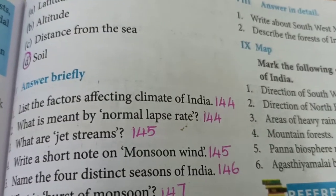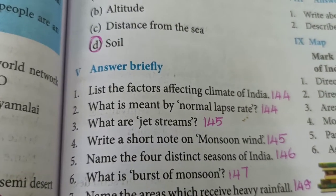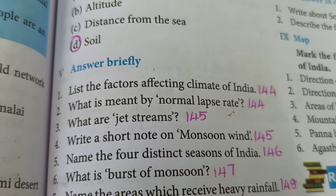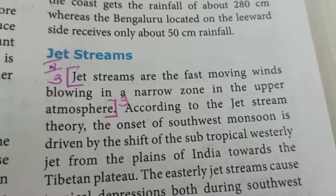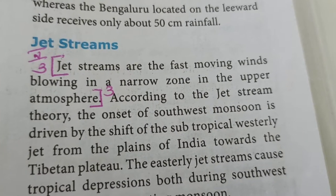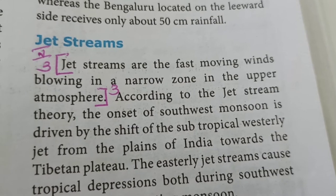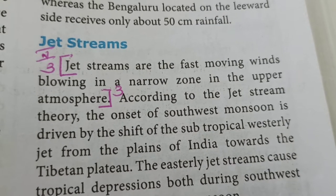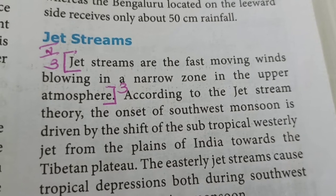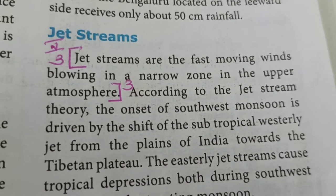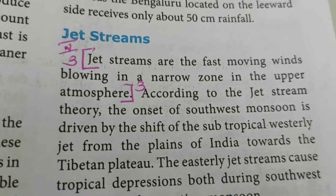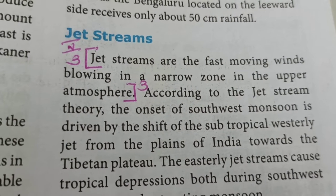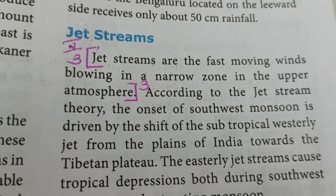Next question: What are jet streams? The answer is on page number 145, under a separate side heading for jet streams. Jet streams are fast-moving winds blowing in a narrow zone in the upper atmosphere. Usually we think winds blow near the land, but there are a set of winds which blow in the upper part of the atmosphere — we call them jet streams.